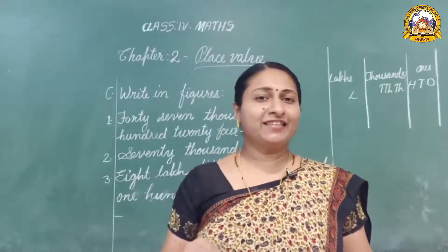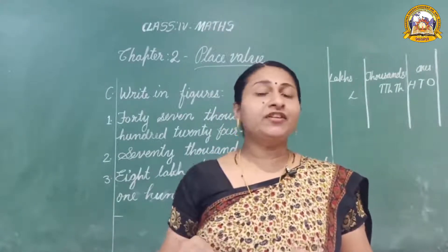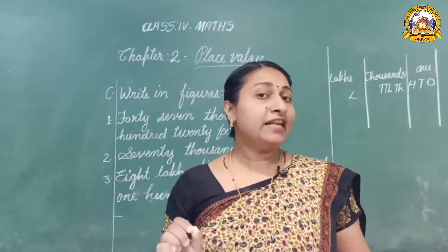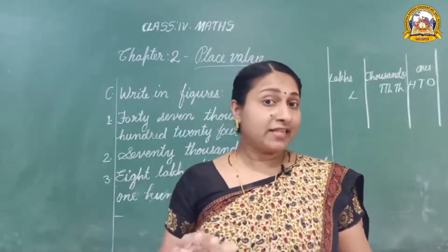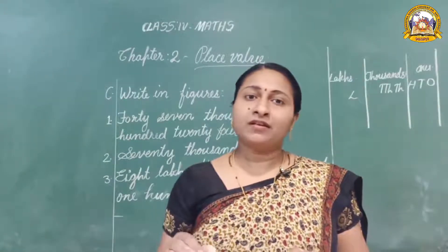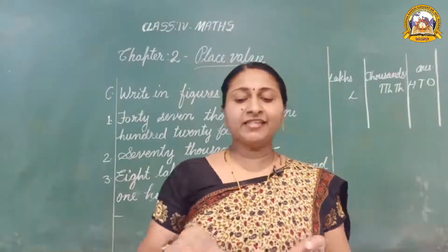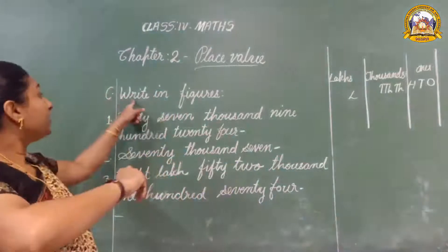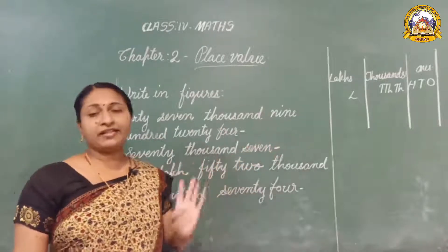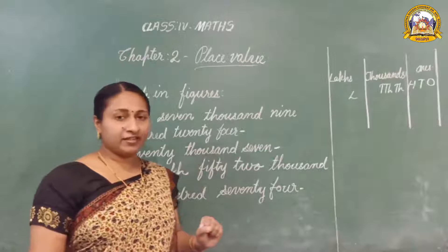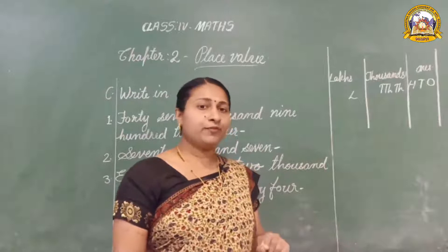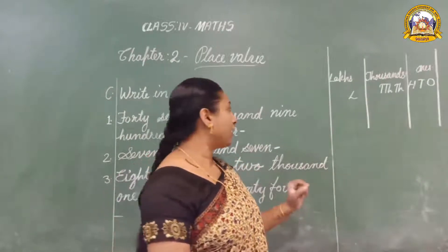Good morning children. In the second chapter, we are learning about the place value of each digit in large numbers. In the last class, we had started exercise 2.1, so let us continue. For question C, we have to write in figures. The number names have been given and we have to write the figures only. To write the figures, we should first make the place value chart — it will help to write the digits very easily.